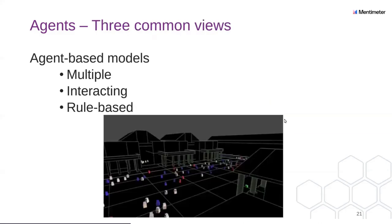But the one I'm really interested in is agent-based models. These are multiple agents in an agent-based model that interact with each other and each act according to rules. The different agents do not have to have the same kind of rules, although they can.